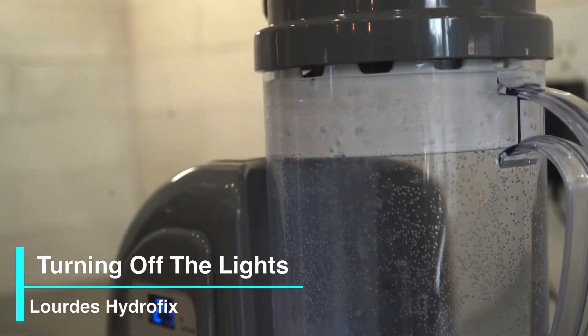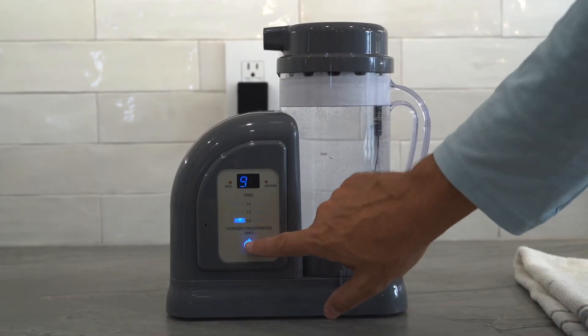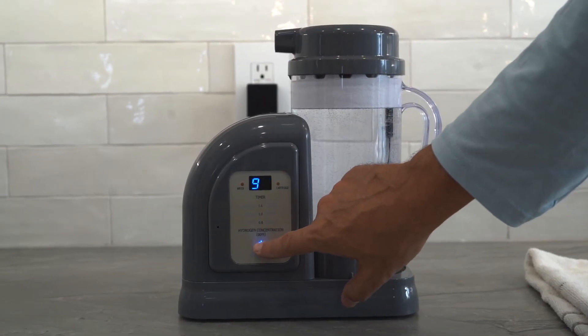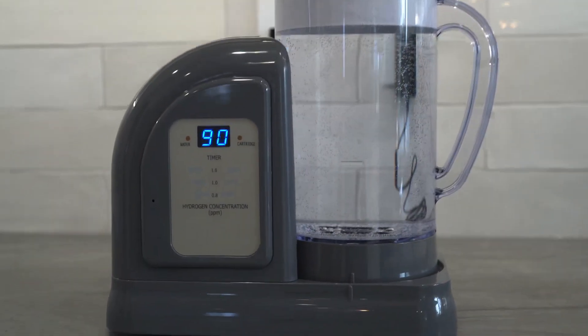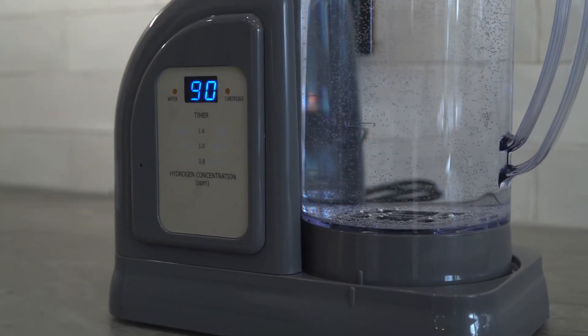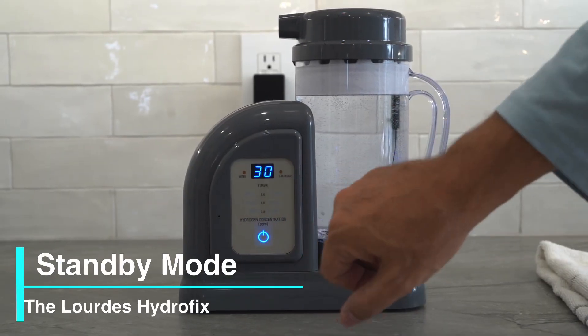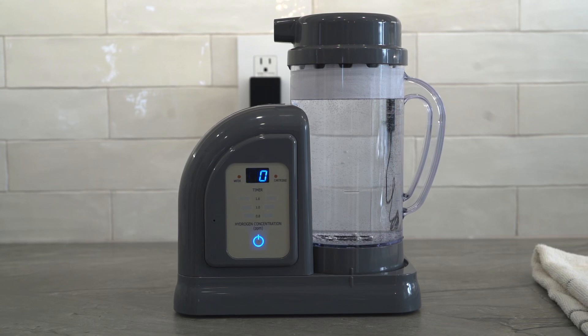Turning off the pitcher illumination lights. To turn off the illumination lights, press and hold the power button during any production mode. When turning the lights off, three beeps will sound and the power button, hydrogen concentration bar, and pitcher illumination lights will all be turned off. As a reminder, standby mode does not produce enough hydrogen gas for inhalation.